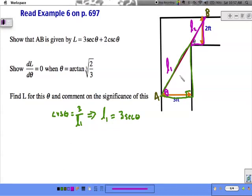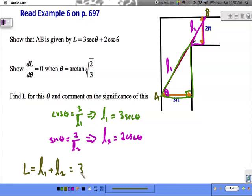We can make a similar argument for L2. Sine of theta, the opposite over hypotenuse, will be 2 over L2. Solving for L2, we get 2 cosecant of theta. And since I've arranged this diagram to give me L equals L1 plus L2, we've accomplished our first task. Just using a bit of simple SOHCAHTOA right triangle trigonometry.